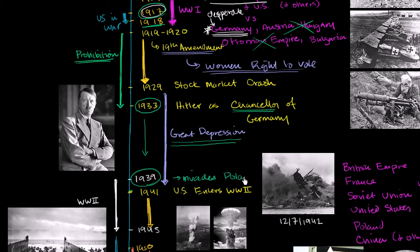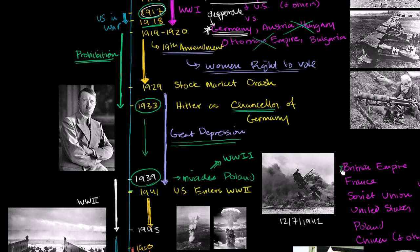But in 1939, Germany invades Poland. This is viewed as the straw that breaks the camel's back, and so it begins World War II. Initially, the great powers that get involved are the British Empire and the Soviet Union. France was also involved but quickly got overrun by the Nazis.